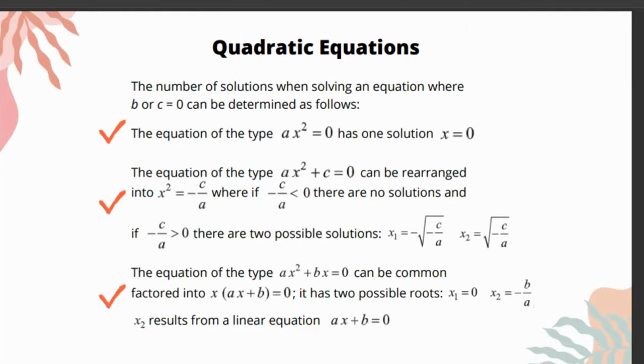If the value in front of the bracket is a constant and does not contain a variable, we are not considering it to be a root. x₂ results from a linear equation ax + b = 0.